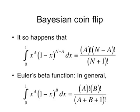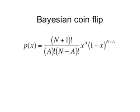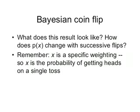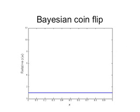This integral is pretty messy, but fortunately it's already been solved — this is Euler's beta function. It happens that the integral from 0 to 1 of x to the a times 1 minus x to the n minus a dx has a known closed form. Our general expression for p(x) has a coefficient from that normalization, and we still have x to the a times 1 minus x to the n minus a. After 0 flips, we have no information, so let's assume a uniform distribution — the weighting could be anything, from always tails at 0, to always heads at 1, or half and half at 0.5.